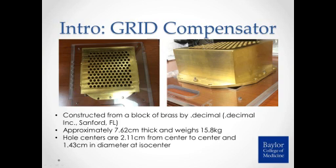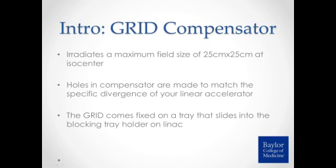The hole centers for our GRID, for our Electa and Infinity, are about 2.1 centimeters from center to center, and about 1.4 centimeters in diameter at machine isocenter. The GRID compensator can irradiate a maximum field size of 25 by 25 at machine isocenter. The holes are made to match the specific divergence of your linear accelerator, so when you order from Dot Decimal you provide the make and model of your LINAC. The GRID comes fixed on a tray that slides directly into your blocking tray holder on your linear accelerator.